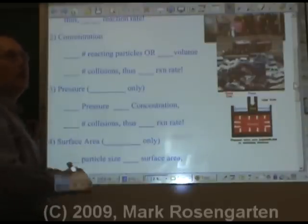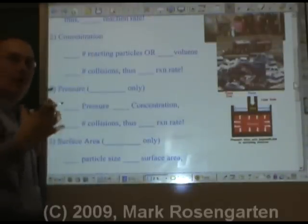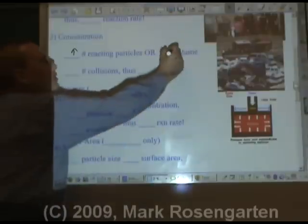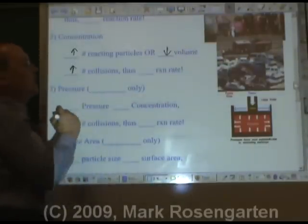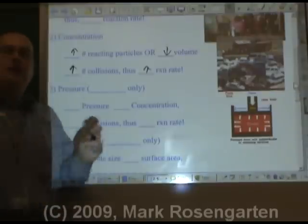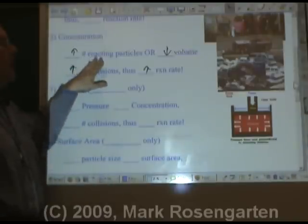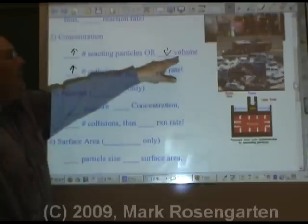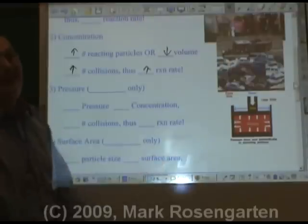The second factor that impacts reaction rate is concentration — in other words, how concentrated are the particles. The more reacting particles you have, or the less space they have to move around in, the more collisions you'll have, and therefore a faster rate. Picture a parking lot with cars in it. If you put more cars in the parking lot, you'll have more collisions. Or, if you have the same number of cars and make the parking lot smaller, there's less room to move around, so they'll collide more frequently — more collisions, faster rate.